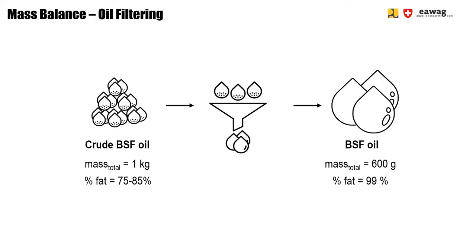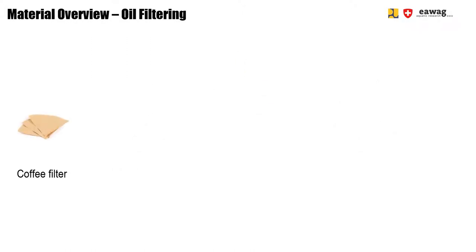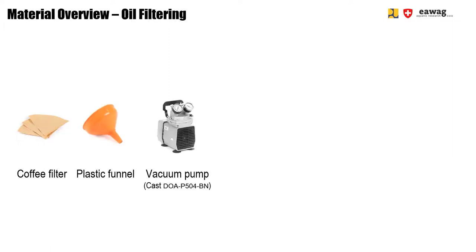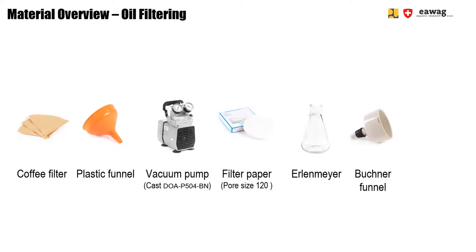Filtering is a slow process, but you can speed it up using a vacuum pump, which requires electricity. For oil filtering, you can use a simple coffee filter and plastic funnel. Alternatively, if available, use a vacuum pump with filter paper, an Erlenmeyer flask, and a Buchner funnel. For storing the oil, we recommend using a light-tight storage container.